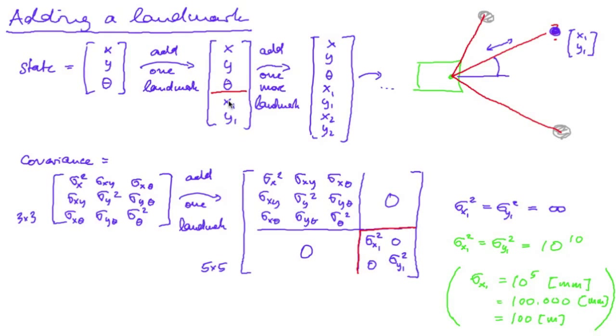Put back the new state in the Kalman filter's state variable. Put back the new covariance in the covariance member variable. And do not forget to increase the number of landmarks, which is also a member variable of the Kalman filter by one.